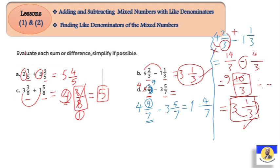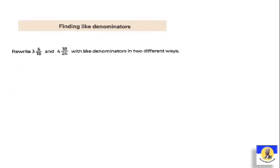Now let's move on and understand the second concept before we return to practice questions. How can you make addition and subtraction with unlike denominators? Finding like denominators — I won't spend too long on this because we covered it extensively in Unit 7, where we had a full lesson on how to find like denominators.